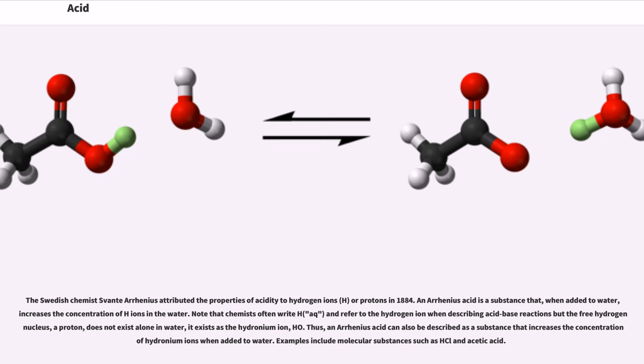An Arrhenius acid is a substance that, when added to water, increases the concentration of H+ ions in the water. Note that chemists often write H+ (aq) and refer to the hydrogen ion when describing acid-base reactions, but the free hydrogen nucleus—a proton—does not exist alone in water; it exists as the hydronium ion (H3O+). Thus, an Arrhenius acid can also be described as a substance that increases the concentration of hydronium ions when added to water. Examples include molecular substances such as HCl and acetic acid.